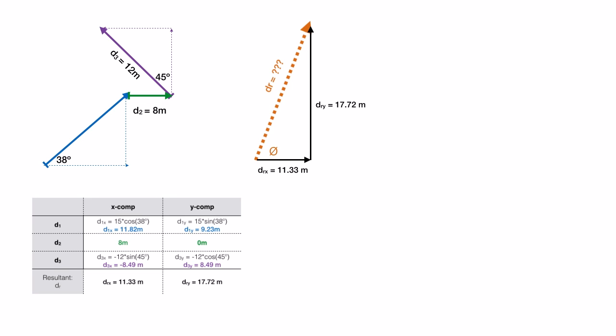Now that it's a right triangle, we can use the Pythagorean theorem to solve for our resultant displacement. That gives us 21 meters. Now, unfortunately, that's not the end of it because that is only the magnitude. We also need to find the direction.